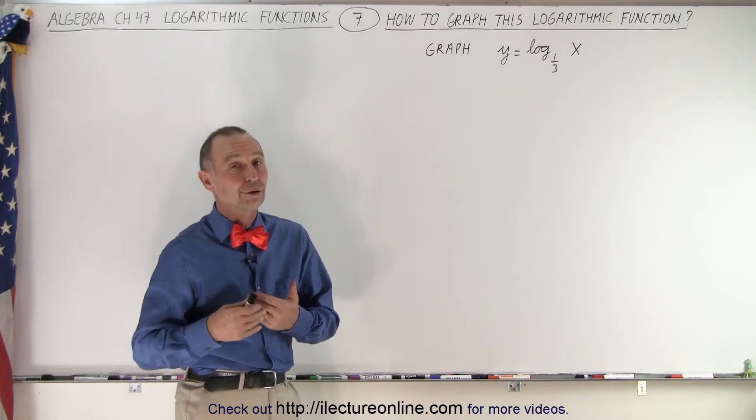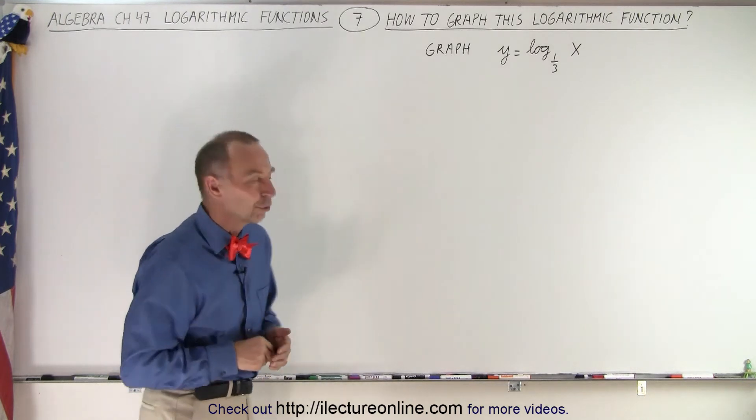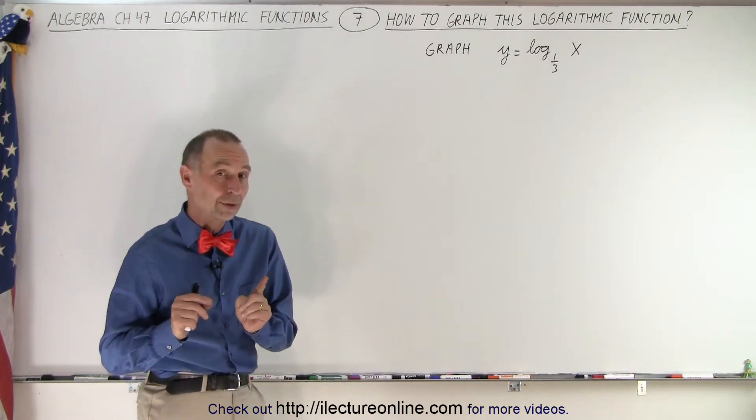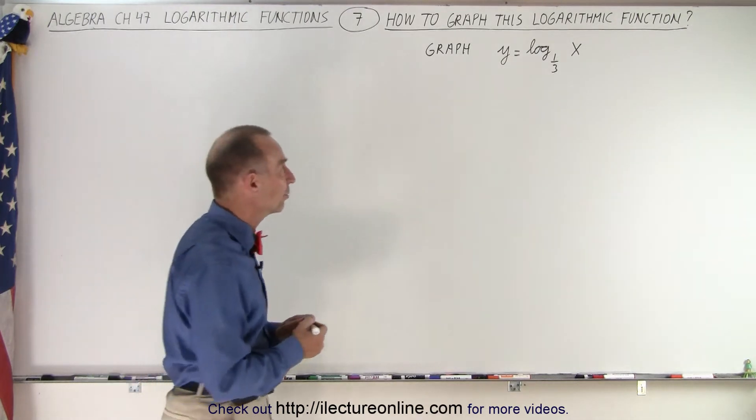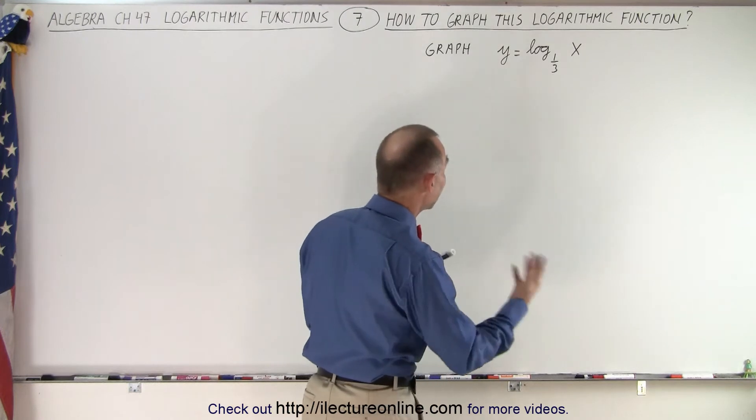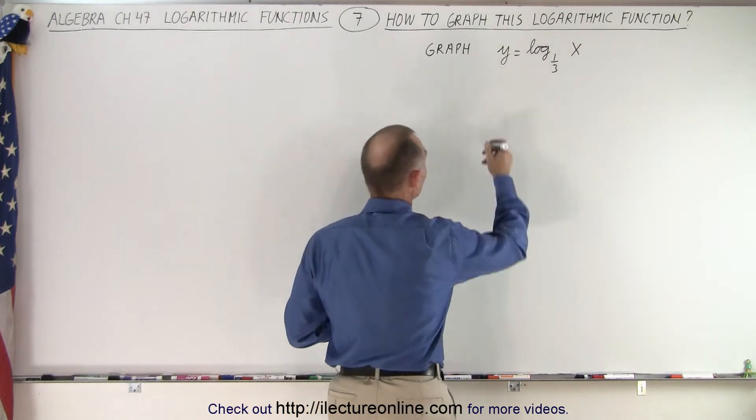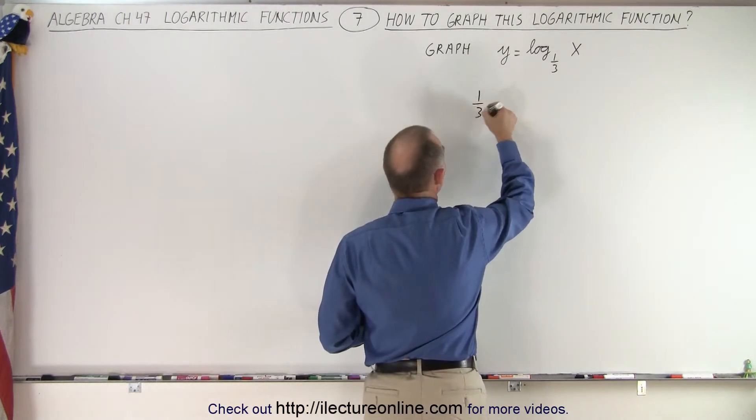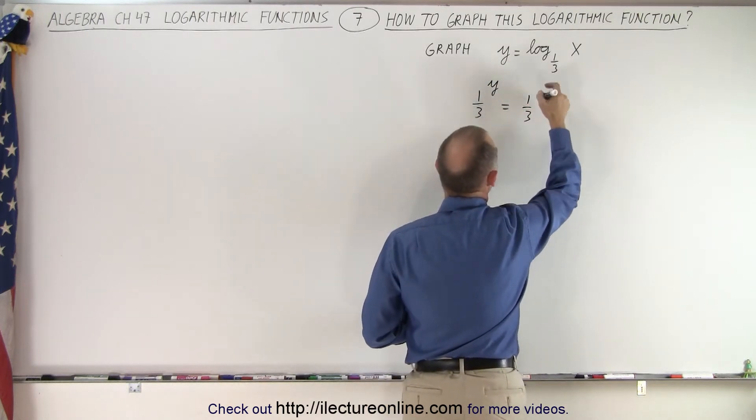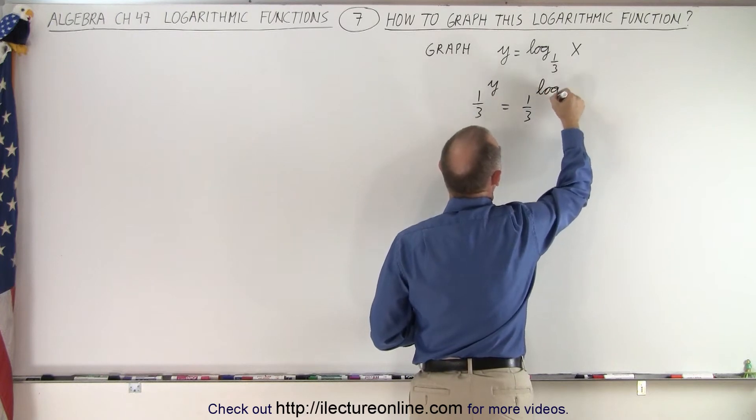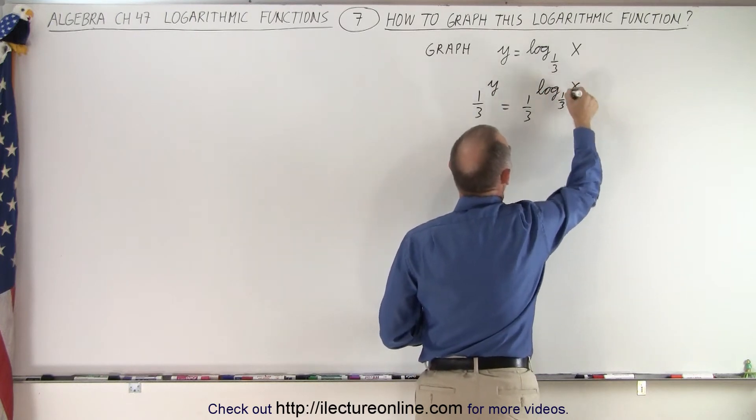One way to do it is to convert it first to an exponential form. Remember, on the previous video we learned how to do that by taking the anti-log of both sides. So first, what we're going to do is take the anti-log, which means we're going to take the base 1/3 and raise it to the exponent y and set it equal to the base 1/3 raised to the exponent log base 1/3 of x.